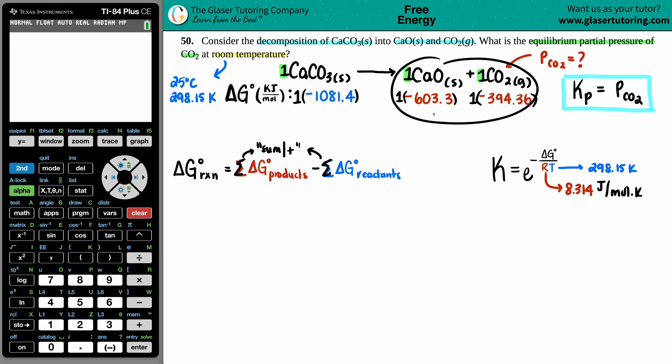If you have more than one product, you have to add them. It's literally CaO plus CO2, so this value plus this one. I don't have to add anything on the reactant side because I only have one reactant, so the sum basically of the reactant side would still be -1081.4.